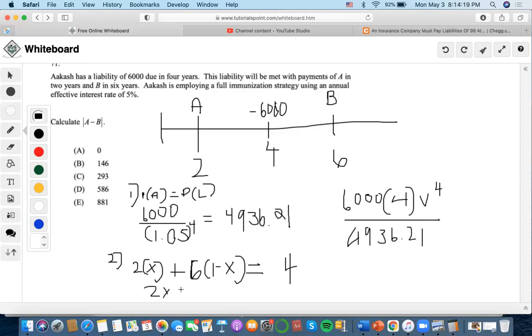So 2X plus 6 minus 6X equals 4. We're going to subtract 6 to the other side, and we're going to get negative 2, then we're going to have negative 4X. So we'll find out that X equals 1/2, which means that asset B would also consist of 1/2 as well, because 1 minus X, 1 minus 1/2 equals 1/2.